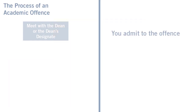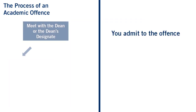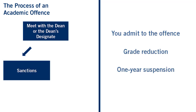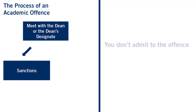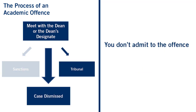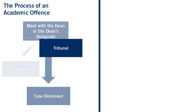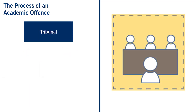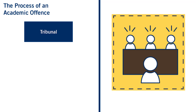If you admit to the offense, the dean can resolve the case by imposing a sanction. The sanctions can range from a grade reduction to a one-year suspension. If you do not admit to the offense, your case can be taken to the tribunal or it can be dismissed. The tribunal will have three panel members who will determine if you are guilty or not guilty of the academic offense.